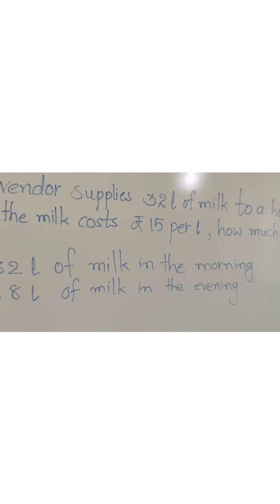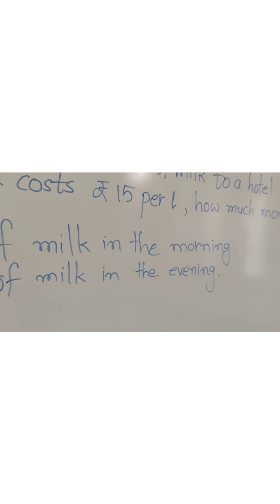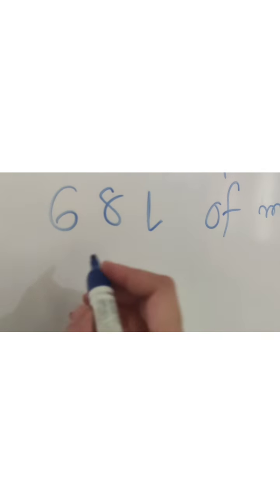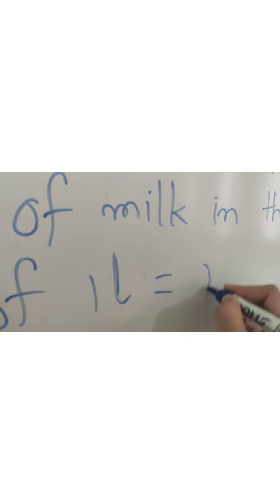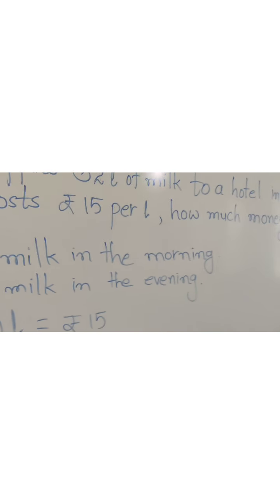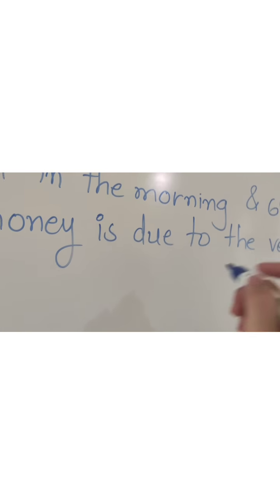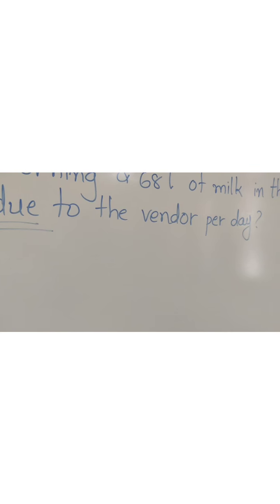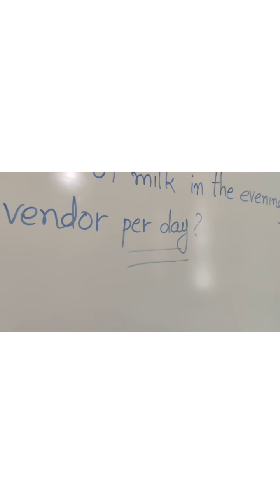If the milk costs ₹15 per litre — per litre means cost of 1 litre — so cost of 1 litre = ₹15. The question asks: how much money is due to the vendor per day? Due means how much money we will give the vendor; per day means in 1 day.